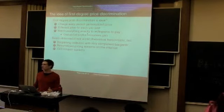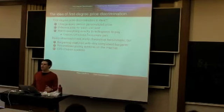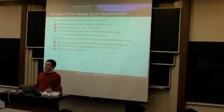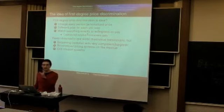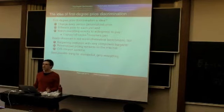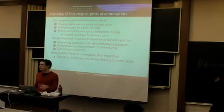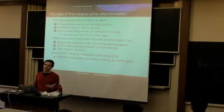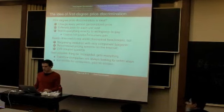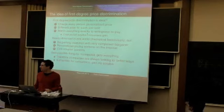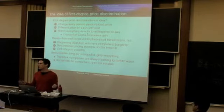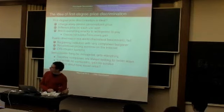CVS similarly has a very elaborate coupon system if you have their ExtraCare card — they track every purchase you make and use that to come up with a model of how much you're willing to pay for different things, offering very personalized coupons. First-degree price discrimination is the best the monopolist can possibly do — he extracts all of the consumers' willingness to pay. But this is terrible for consumers, because they get all their surplus taken away and everything they're willing to pay is captured by the monopoly.